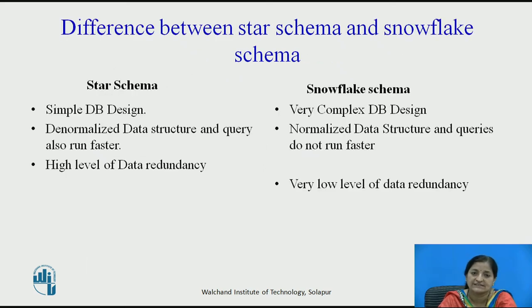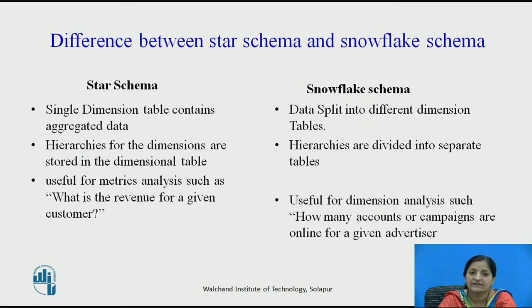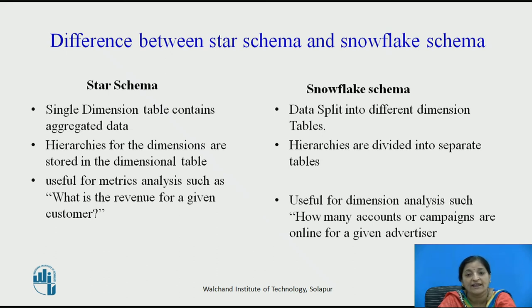The differences between star schema and snowflake schema are as follows. Star schema has a simple database design; snowflake schema has a complex design. Star schema provides a denormalized data structure, so queries run faster with efficient query processing. Snowflake schema provides a normalized structure, so queries require more joins and do not run as fast. Star schema has a high level of data redundancy; snowflake schema has very low redundancy. In star schema, a single dimension table contains aggregated data; in snowflake schema, data is split into different dimension tables. Hierarchies for dimensions are stored in the dimension table in star schema, but divided into separate tables in snowflake schema. Star schema is useful for matrix analysis such as revenue for a given customer, while snowflake schema is useful for dimension analysis such as how many accounts or campaigns are online for a given advertiser.